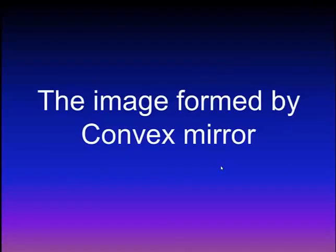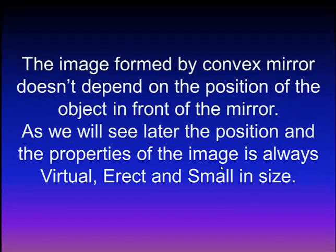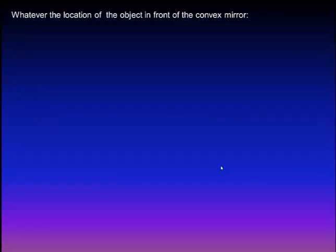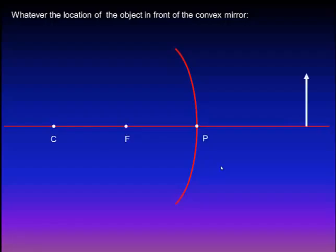We will now talk about the image formed by the convex mirror. The image formed by a convex mirror does not depend on the position of the object in front of the mirror. The position and properties of the image are always virtual, erect, and small in size. We will have a convex mirror; the center of mirror curvature is behind the reflecting surface. We have the focus and the pole of the mirror. The object will be in front of the reflecting surface, which is the outer surface in the case of a convex mirror.